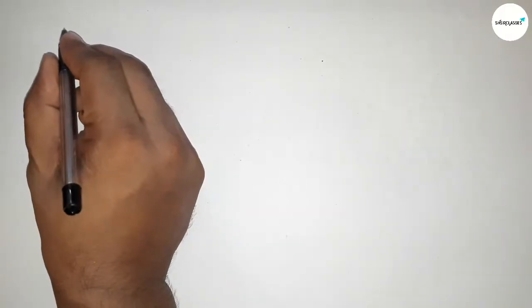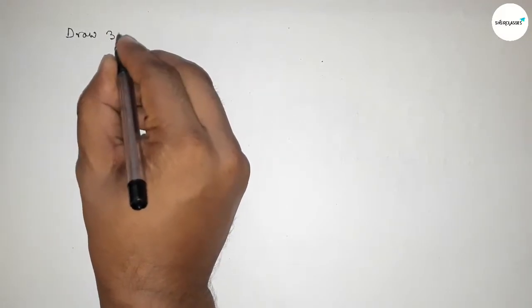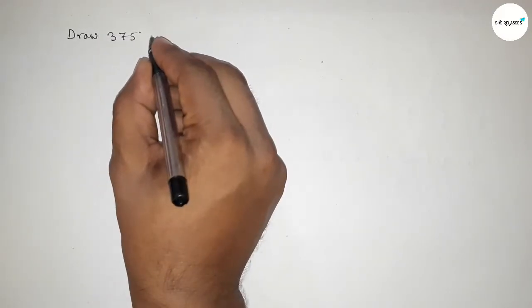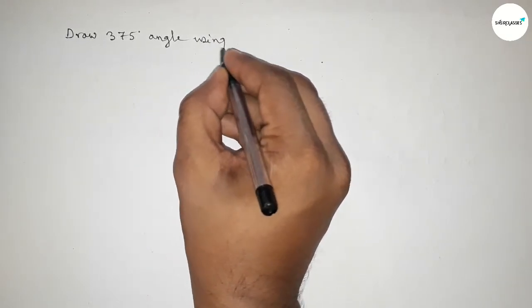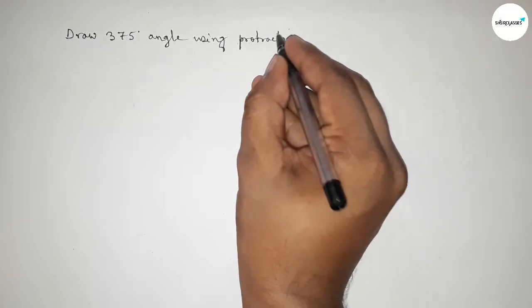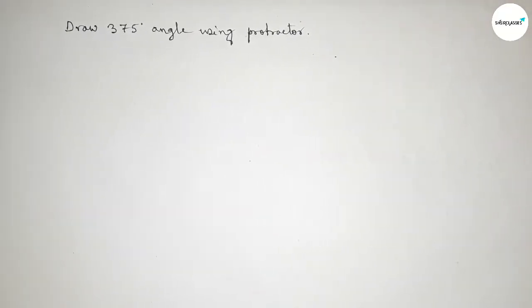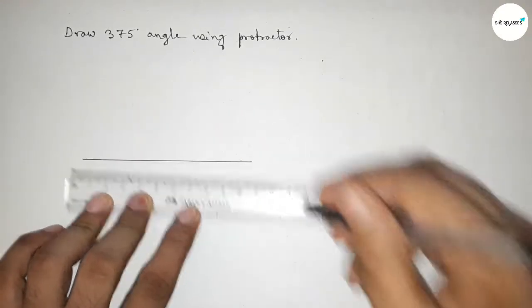Hi everyone, welcome to SI Share Classes. Today in this video, we have to draw a 375-degree angle using a protractor in an easy way. So let's start the video. First of all, we have to draw a straight line of any length, taking point B here and C here.